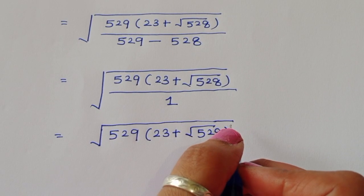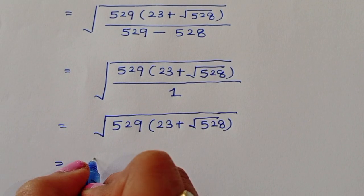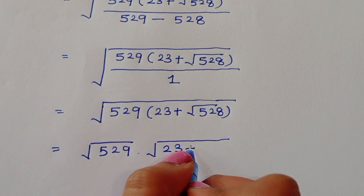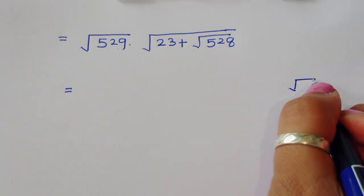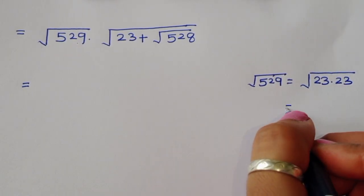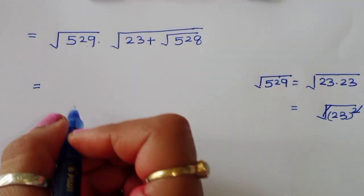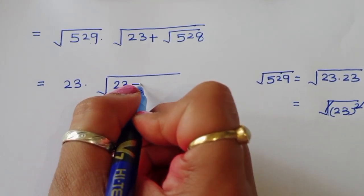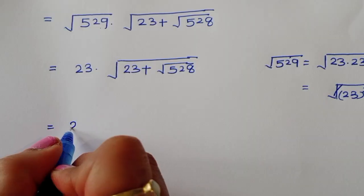Now we know that √529 equals √(23×23) = √(23²), and the square cancels with the square root, giving value 23. So we can write this as 23 times (23 plus √528).